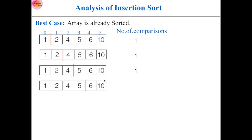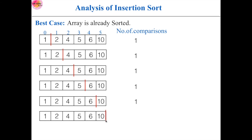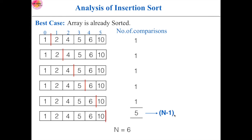This is our sorted part and this is our unsorted part. Here, 6 is compared with 5 — 6 is in its correct position, so no need for any swapping. The number of comparisons is 1. Next, 10 is compared with 6 — 10 is in its correct position, so no need for any swapping or movements. The number of comparisons is 1. Now we have to calculate the total number of comparisons, which is 5. In big O notation, we express the number of operations in terms of n. Here n is 6, so we can rewrite 5 as n-1. In big O notation, we ignore constant terms, so the best case is O(n).